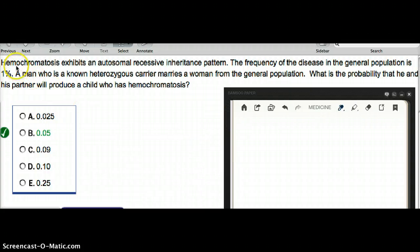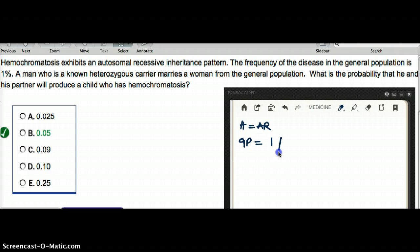In this question, hemochromatosis exhibits an autosomal recessive inheritance pattern. The frequency of the disease in the general population is 1%. So we know that hemochromatosis is autosomal recessive, and the frequency is 1%, meaning 1 in 100 people in a particular population will have the disease.